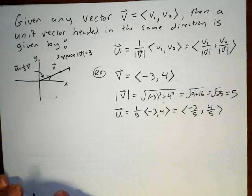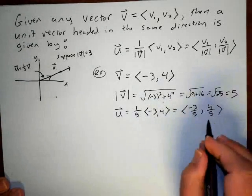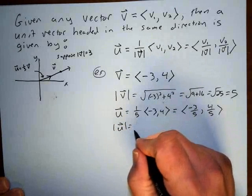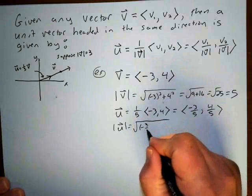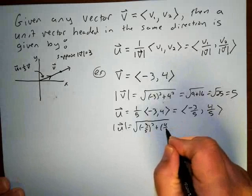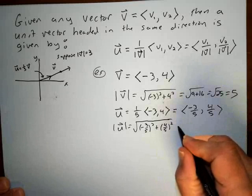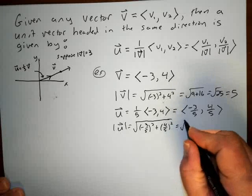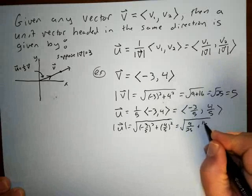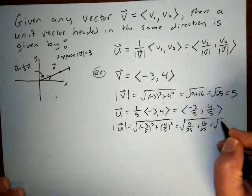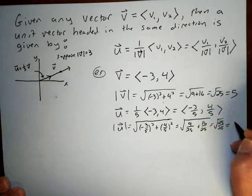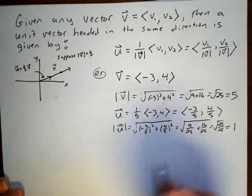We can verify this is a unit vector by taking the magnitude: √((-3/5)² + (4/5)²) = √(9/25 + 16/25) = √(25/25) = √1 = 1. So (-3/5, 4/5) is confirmed to be a unit vector.